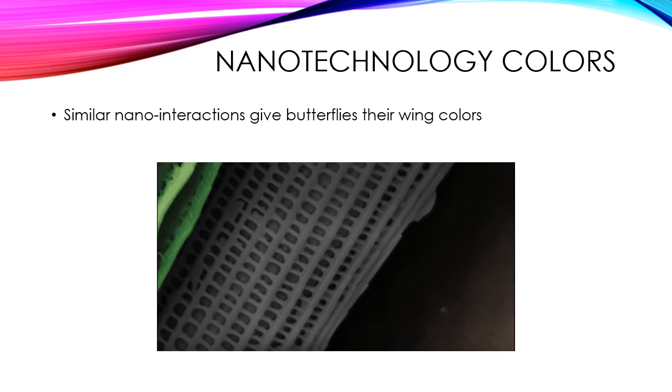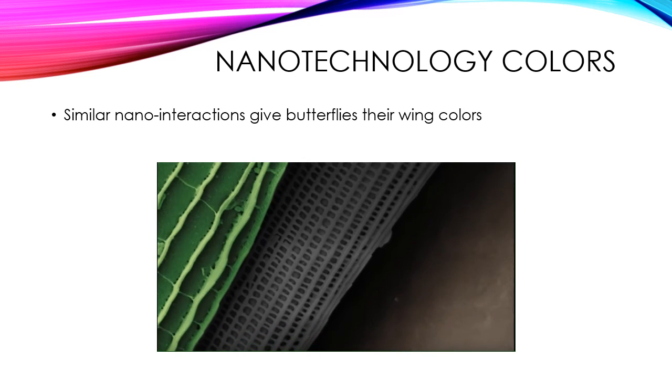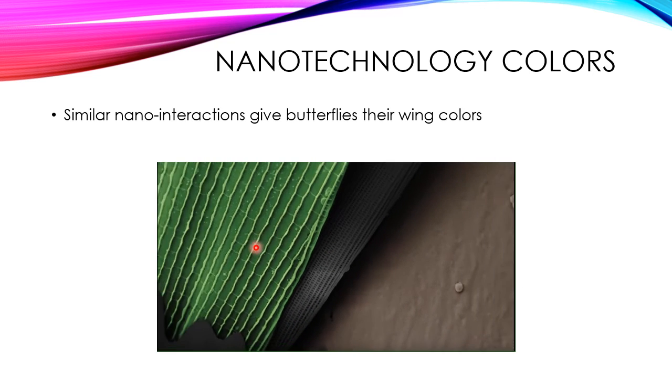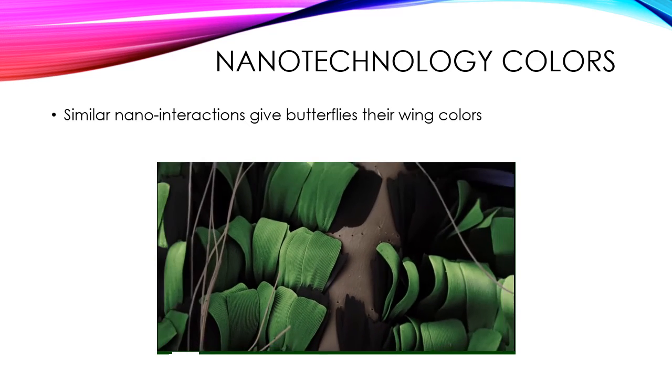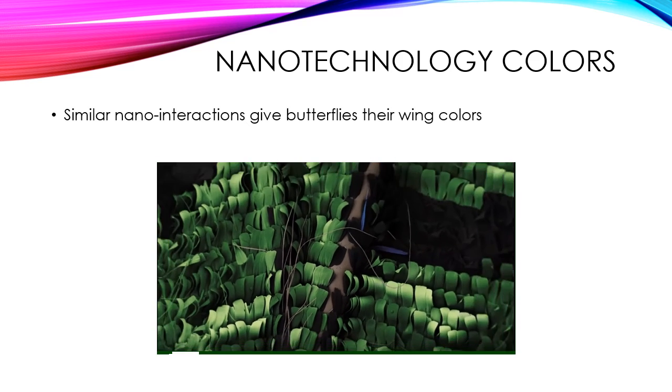For example, a butterfly wing has no pigment, it has no natural colors. The reason you see different colors on it is because of the way that light interacts with very tiny nanostructures inside of the wing and on top of it. So let's take a look at that in this video right here.